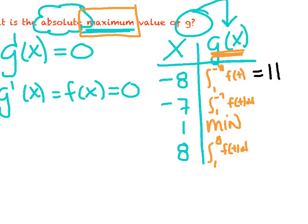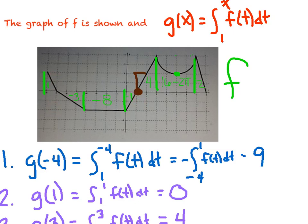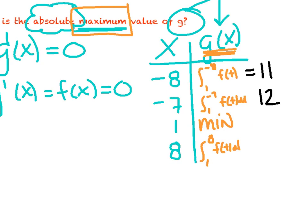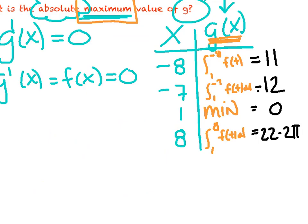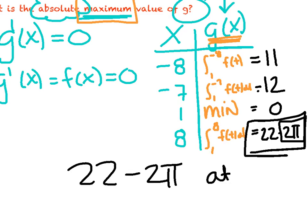The integral from 1 to 8 — no bound switching — gives 4, 6 plus 16 minus 2 pi, totaling 22 minus 2 pi. Evaluating which is largest: 2 pi is about 6.28, so 22 minus 2 pi is clearly the largest. The absolute maximum value is 22 minus 2 pi, and it occurs at x equals 8.